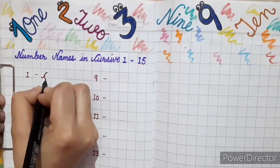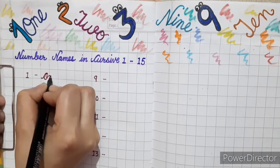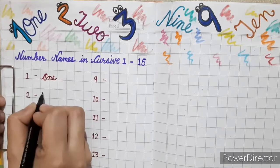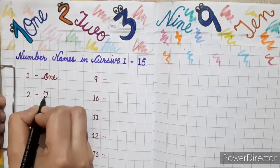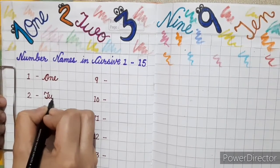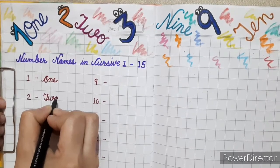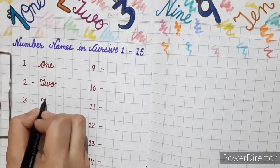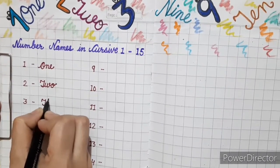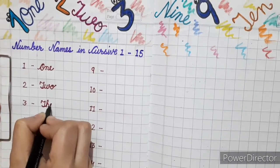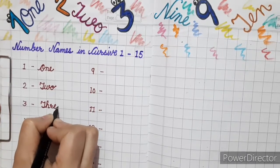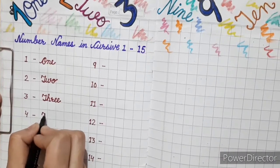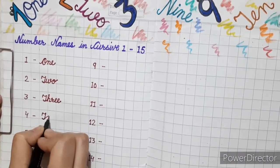1 - ONE - 1. 2 - TWO - 2. 3 - THREE - 3. 4 - FO...